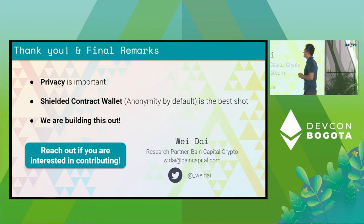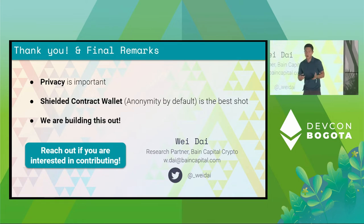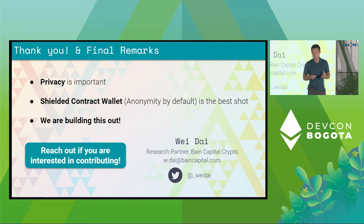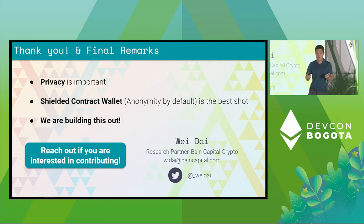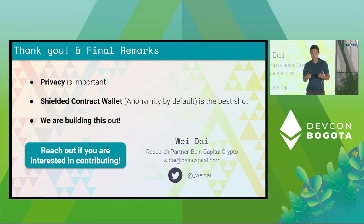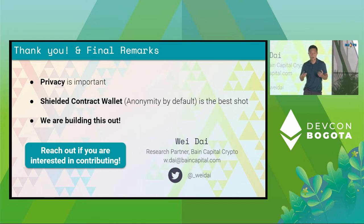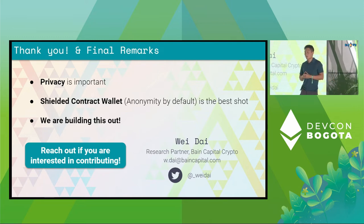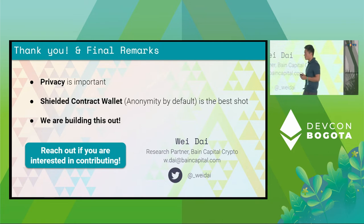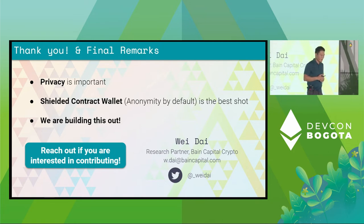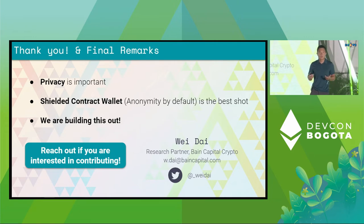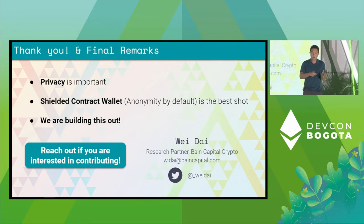Let's recap what we've learned in this talk. First, privacy is really important. We do not have privacy on Ethereum. We need some type of privacy solution for Ethereum that's really usable before Ethereum can go mainstream. A shielded contract wallet — combining a shielded pool and a contract wallet — is our best shot at this backwards-compatible, feature-complete privacy layer. Finally, we're building this out. The hope is that long-term, most people will actually be inside a privacy layer instead of the standard EOA layer.